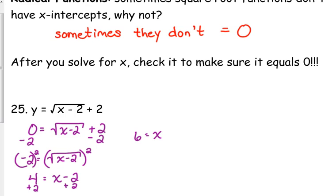But when we plug 6 back into that equation, 6 minus 2 is 4, square root of 4 is 2, 2 plus 2 is not 0. 2 plus 2 is 4. So this is not the x-intercept.